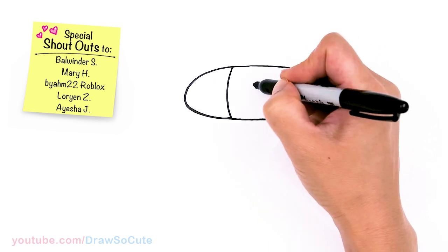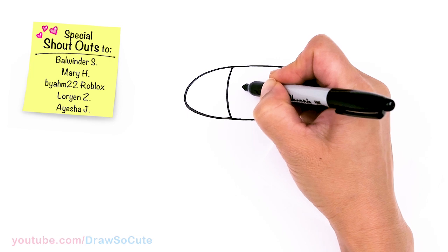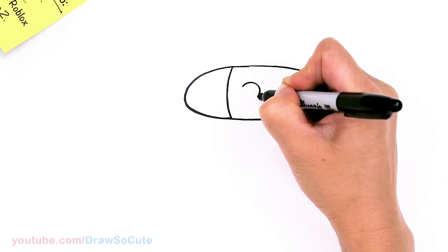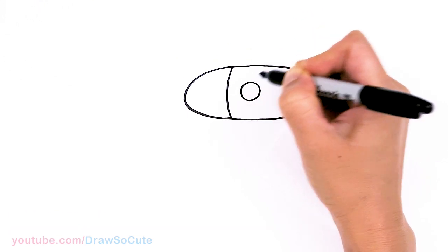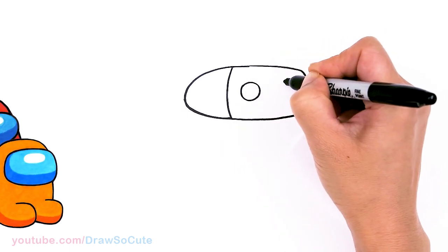Then from there, right in the center, this area right here, we're going to center the eyes. So I'm just going to draw two circles. And same thing right across.